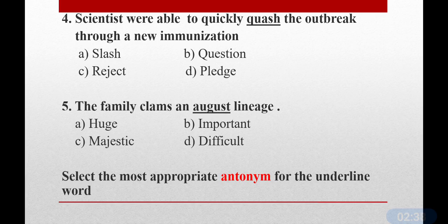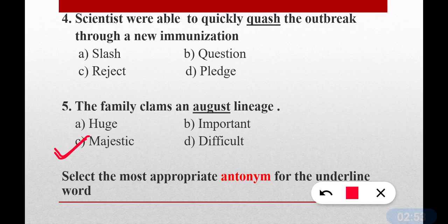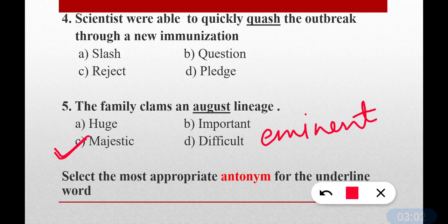Question number five: The family claims an august lineage. What is the meaning of 'august'? The correct answer is option C — majestic. Very important. It can also mean respectable or eminent. Eminent has another synonym: prominent. We can also say respected.